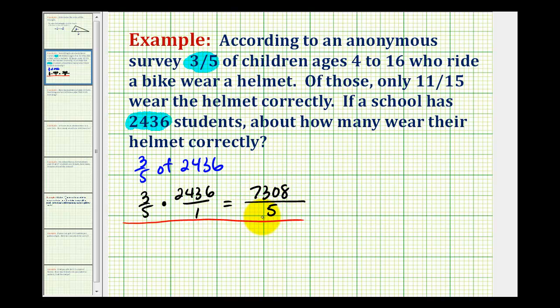Now I'm going to leave it in this form for right now. So this represents the number of students that actually wear a helmet. And then, of this number of students, only 11/15 wear the helmet correctly. And that's the question we want to answer. So now we want to determine what is 11/15 of 7,308 fifths. And this would represent the number of students that wear their helmets correctly.